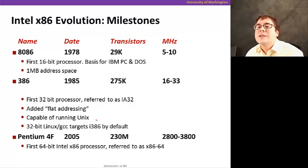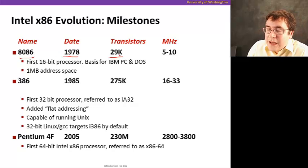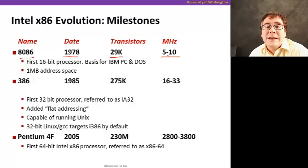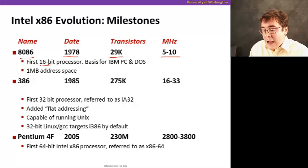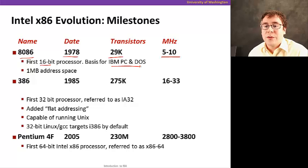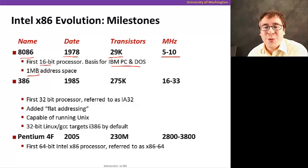Let's look at some numbers to appreciate how amazing this evolution was. Back in 1978 when the 8086 was introduced, that processor had 29,000 transistors and ran between 5 and 10 megahertz — that's 5 to 10 million cycles per second. It was the first 16-bit processor, meaning the word size was 16 bits or 2 bytes. It was the basis for the IBM PC and DOS, which really popularized personal computing. The total address space — the maximum memory you could address — was 1 megabyte. It can't even hold a photograph.